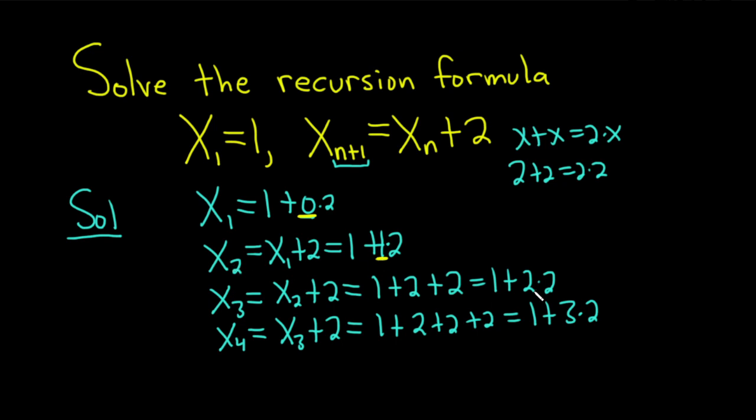So X sub 5 should be equal to 1 plus 4 times 2. Let's check.